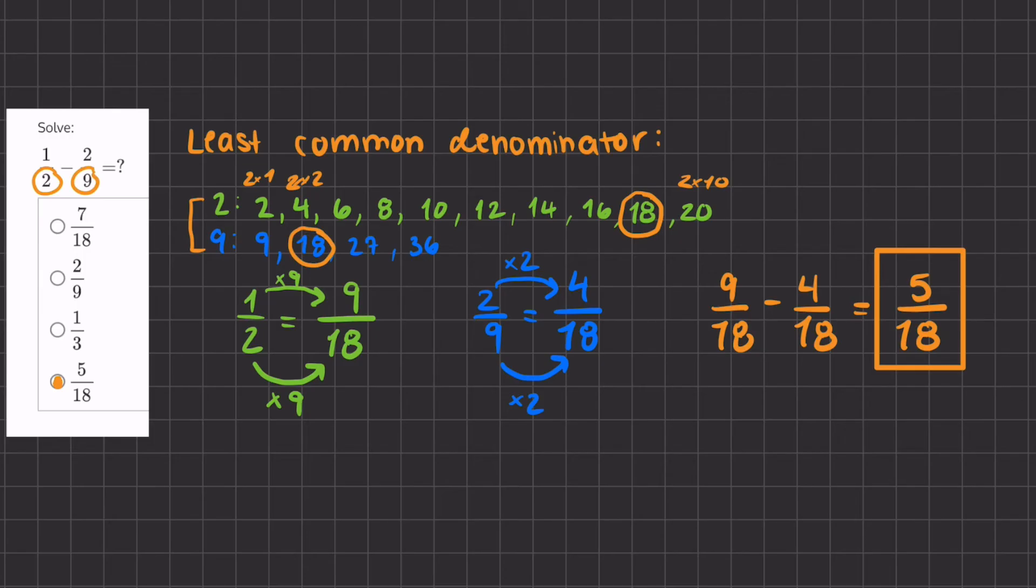Now I want to show you one other way to find a common denominator. It might not be the least common denominator, but it will work. You can take 1 half minus 2 ninths.